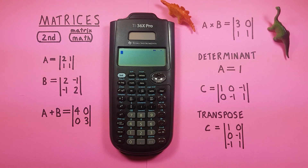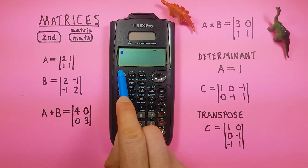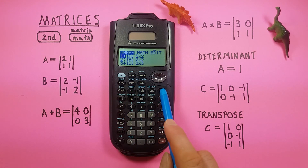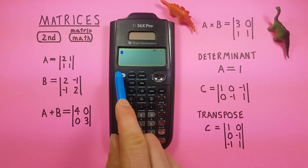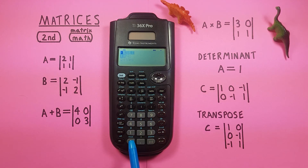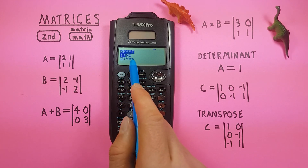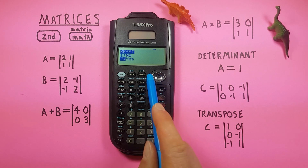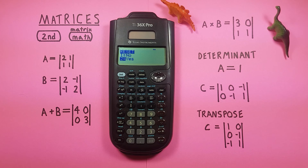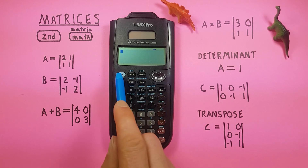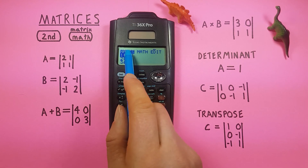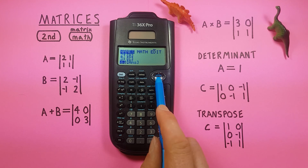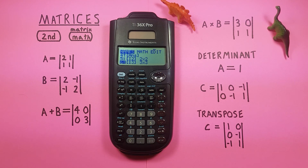When you're done working with matrices and want to clear the stored slots, go to the main menu and press second and then the zero key — the reset function. This brings up the reset menu which will reset the calculator and clear any saved data, so be aware of that. Press enter, it will say memory cleared, and going into matrix mode you'll see nothing is stored. Make sure you're done working with your matrices before doing this.